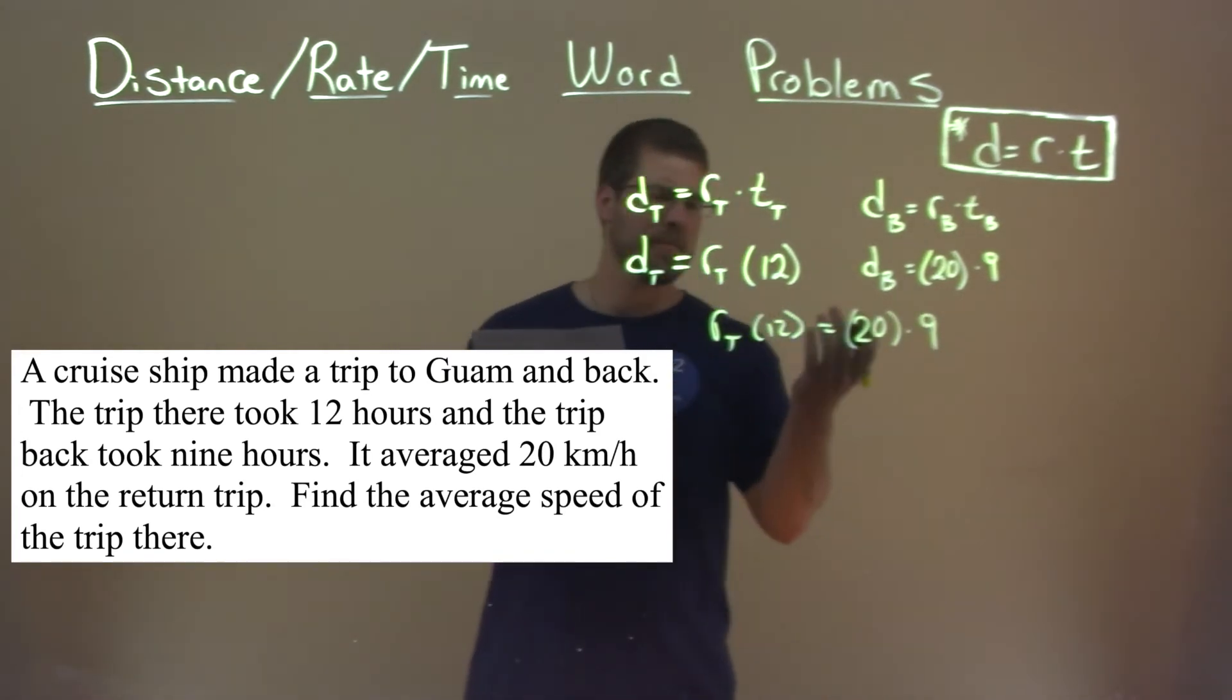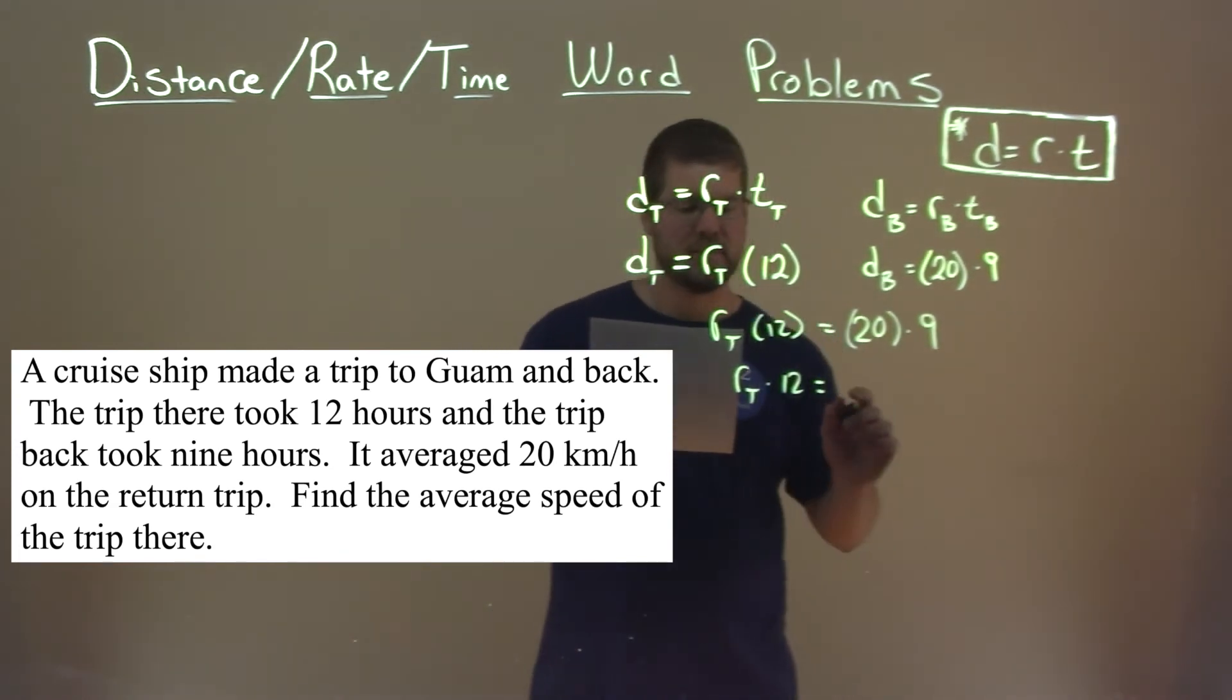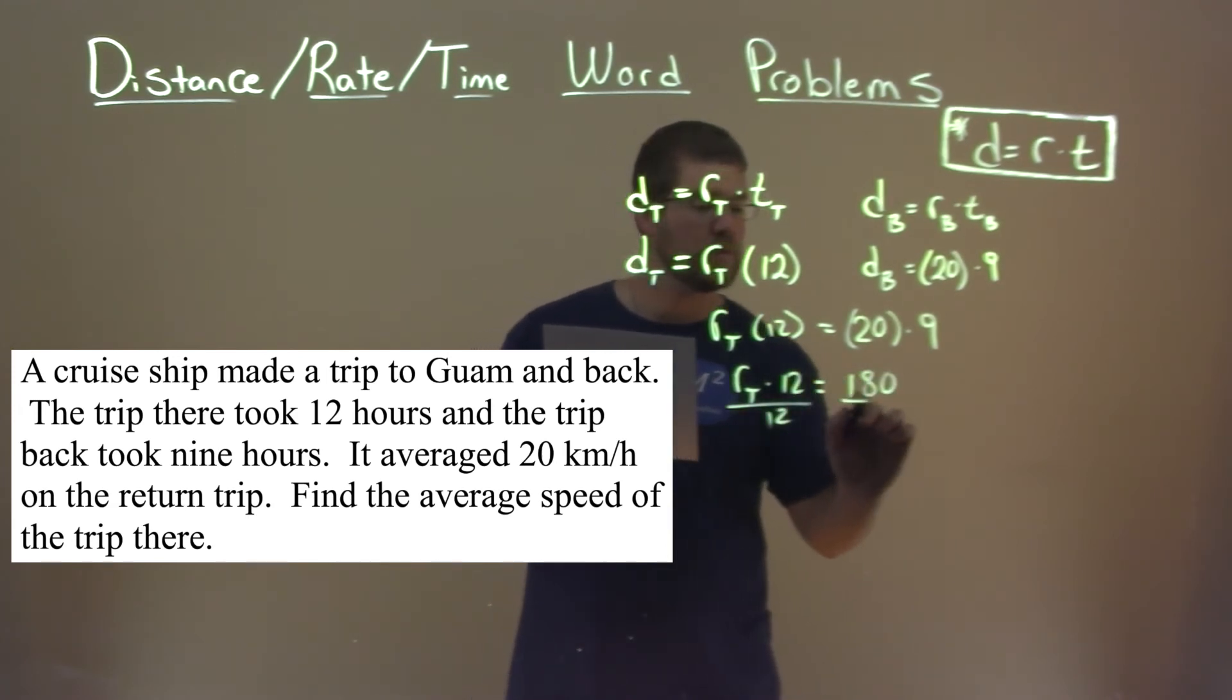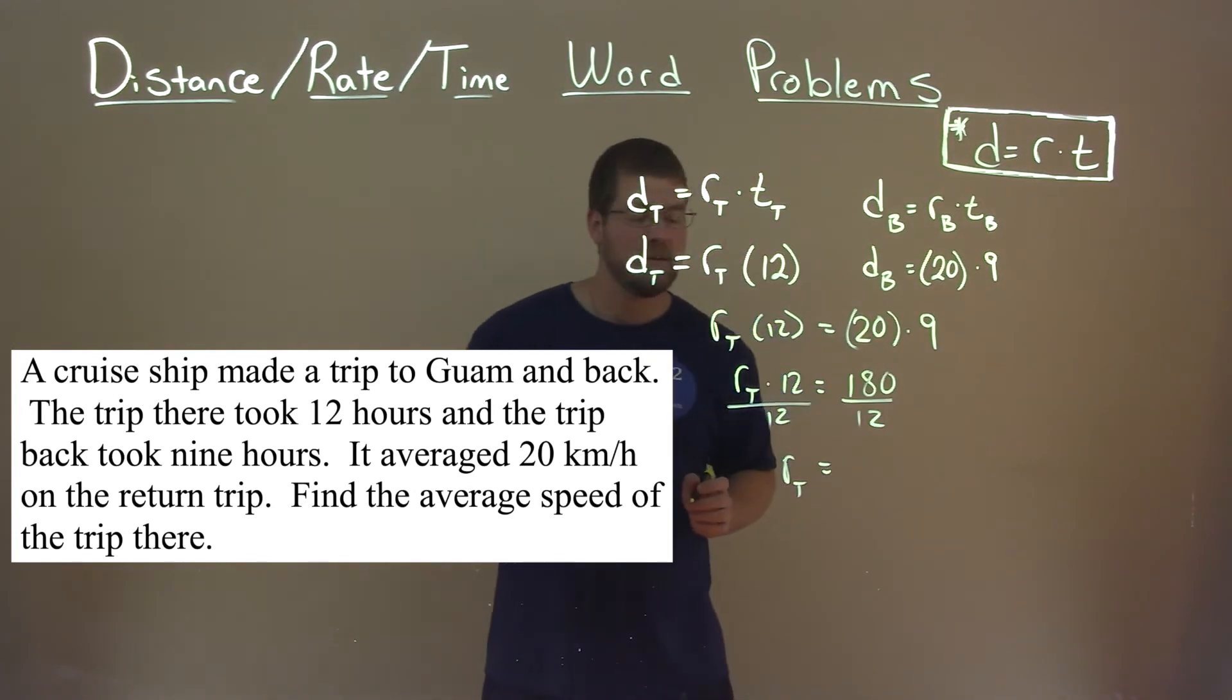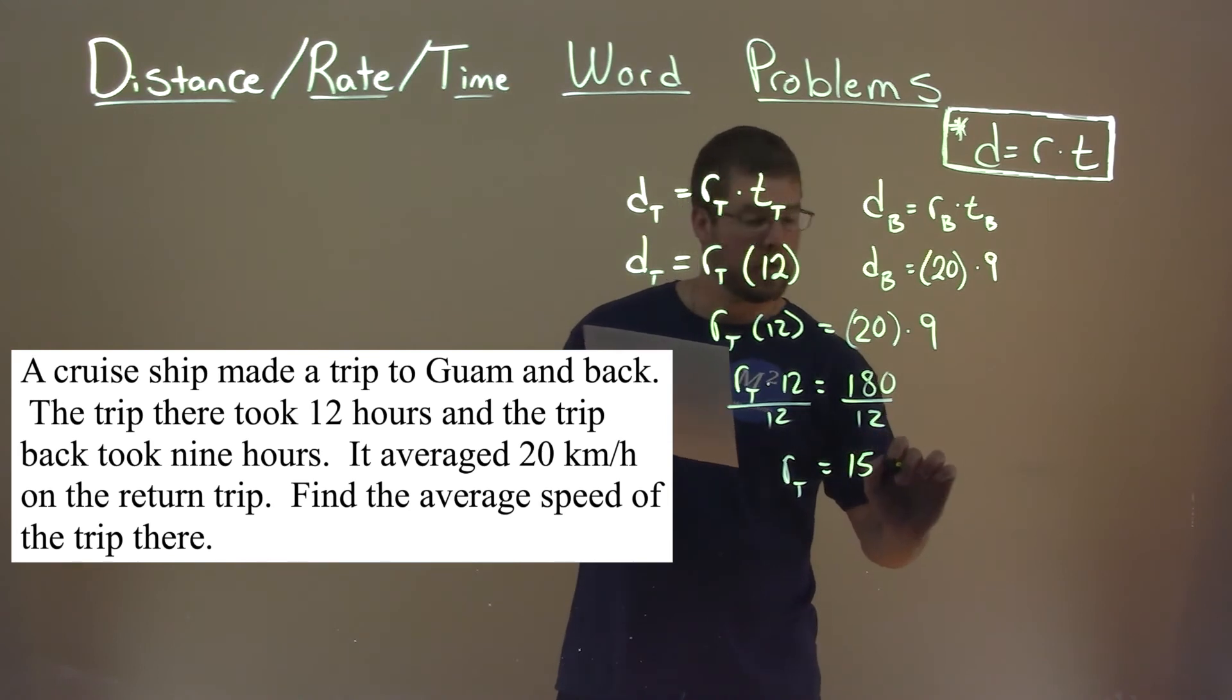Well, r_t times 12 is, well, r_t times 12. And let's simplify that 20 times 9, which is 180. And if we divide 12 to both sides here, we have the rate going there is equal to 180 divided by 12, which is 15. And the units there is kilometers per hour.